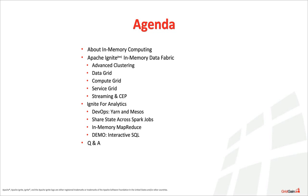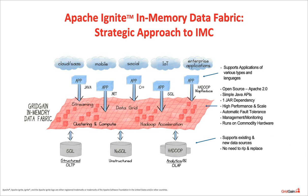We'll be talking about clustering, data grid — data grid will be a focus in some detail, it's one of the biggest components we provide — compute grid, streaming, service grid. We'll also talk about Apache Ignite Spark and Hadoop features, such as our in-memory file system, MapReduce, and in-memory RDDs for Spark. At the end, we'll do a demo comparing Ignite SQL versus Spark SQL. The main purpose of in-memory data fabric is to improve performance and scalability of your application by providing a collection of independent but well-integrated components.